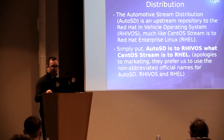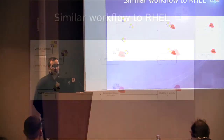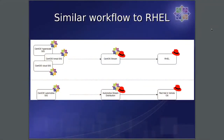Our official names are the longer versions, just to get that right. We have a very similar workflow to RHEL: in RHEL, the various SIGs contribute to CentOS Stream, and that eventually propagates to RHEL. In the Automotive org it's very similar but different — the CentOS Automotive SIG contributes to the Automotive Stream distribution, and that gets propagated to the Red Hat in-vehicle OS.